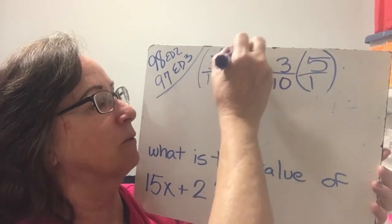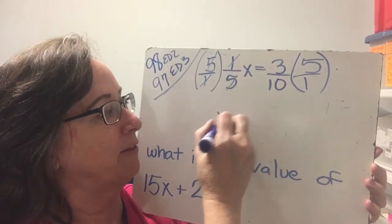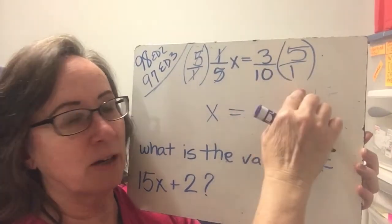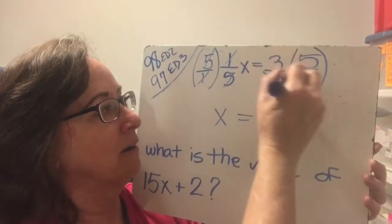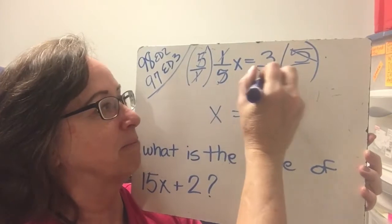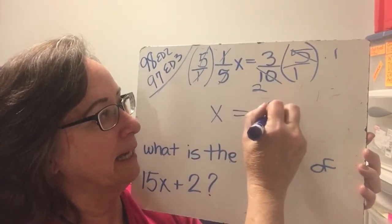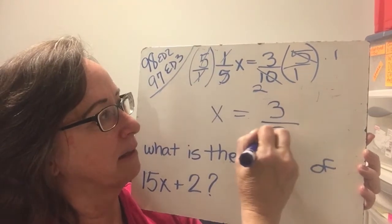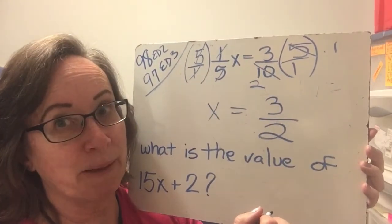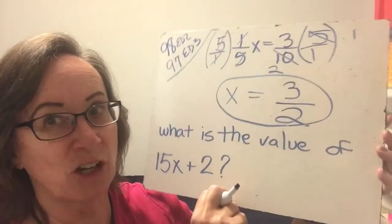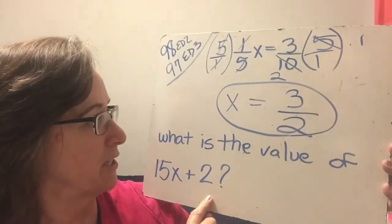The 5s cancel. The 1s cancel. I'm left with just x. And x is 15 over 10, or we can cancel a 5 out of both of those. 2, 1 is 3 halves. And 15 over 10 does become 3 halves. Now we found our clue. Let's come down here and find our treasure.